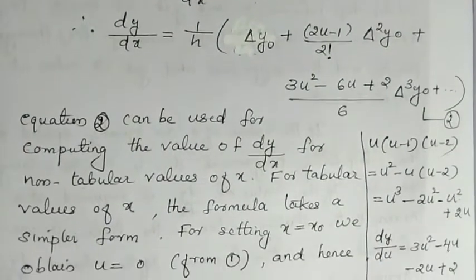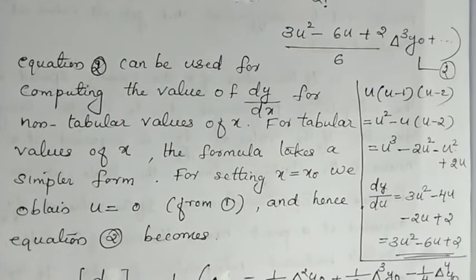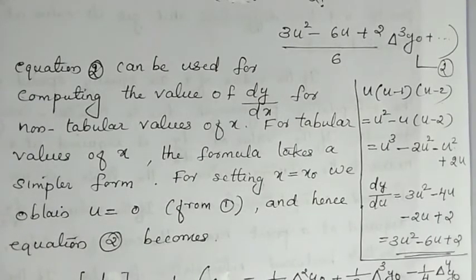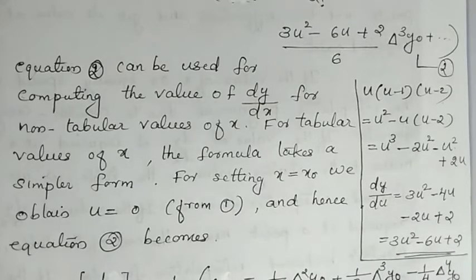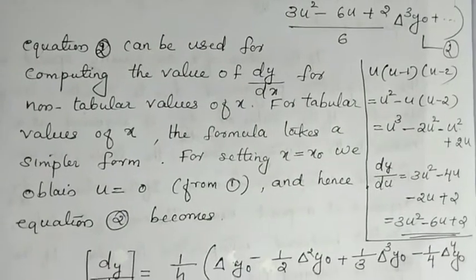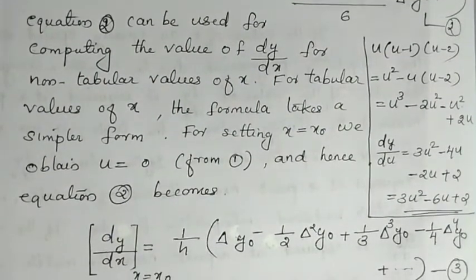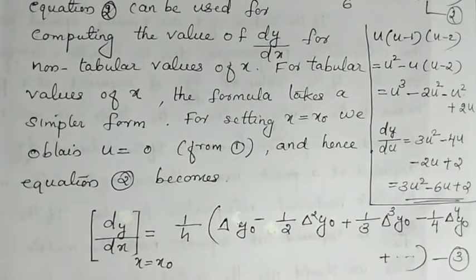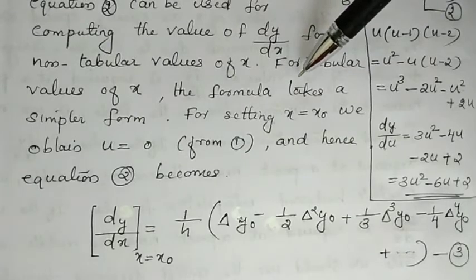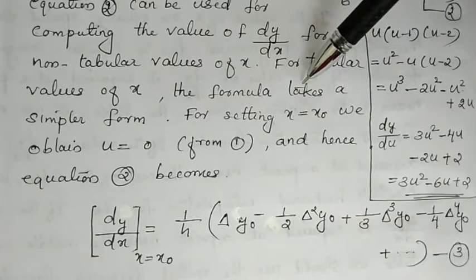Equation 1 is x = x₀ + u·h, and Equation 2 can be used for computing the value of dy/dx for non-tabular forms. This is Newton's forward interpolation formula, which we use for differentiation.